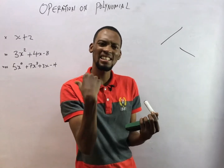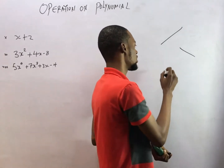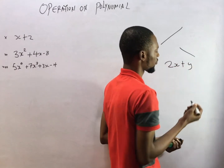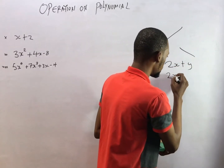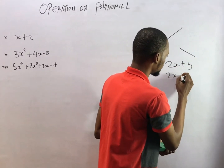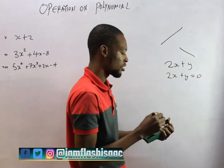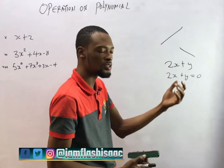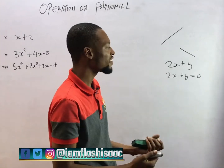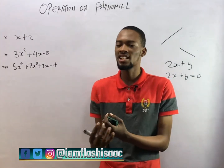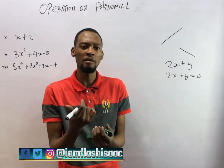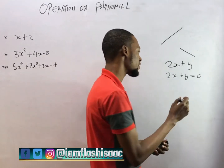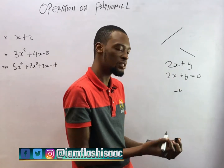Now, a polynomial is an expression. This is an expression, and this is an equation. Equations have an equality sign while expressions don't. So polynomials have ascending or descending power of variables that are not negative — not negative variables.